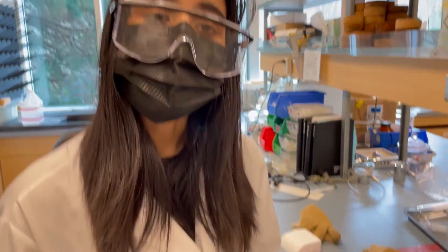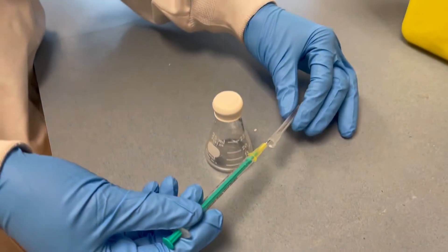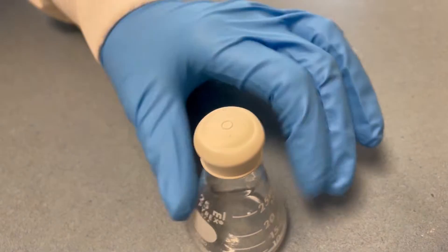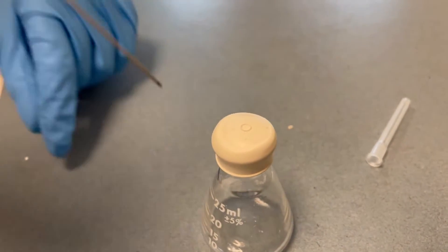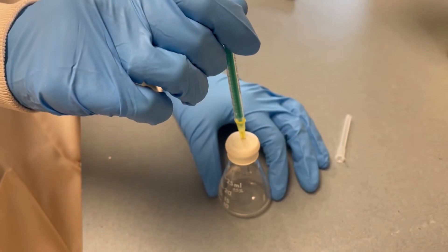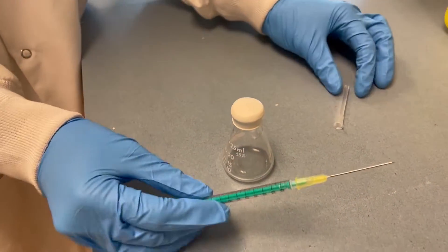When using a needle with a septum or a sure seal bottle, you want to try and aim for the middle of the septum as that's going to be the thinnest and most easiest to puncture through. Just go in like that and to pull out go slowly and it'll come right out.